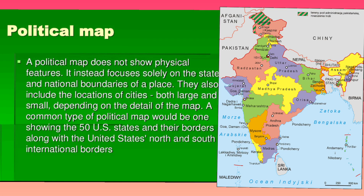First, we will discuss about political map. A political map is a map which shows only the boundaries. We will come to know about the states, capitals, union territories, and boundary lines — we are going to know about individual places on a political map. You can observe the map on screen which gives clear boundaries: where is Andhra Pradesh, where is Telangana, where is the union territory, and so on. So what we learn from a political map is the boundaries of all the states, capitals, and union territories. This is called a political map — a map which gives us information about the boundaries of places.